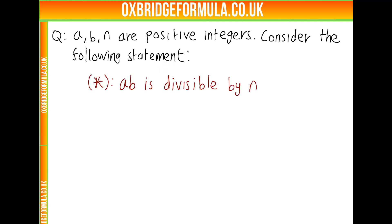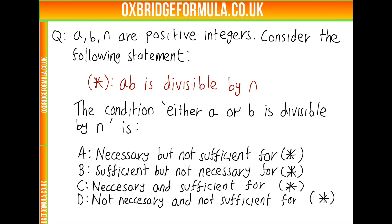AB is divisible by N. And then we're told about the condition either A or B is divisible by N. And we're asked, is this necessary but not sufficient for star? Sufficient but not necessary for star? Necessary and sufficient for star? Or neither necessary nor sufficient for the condition star?